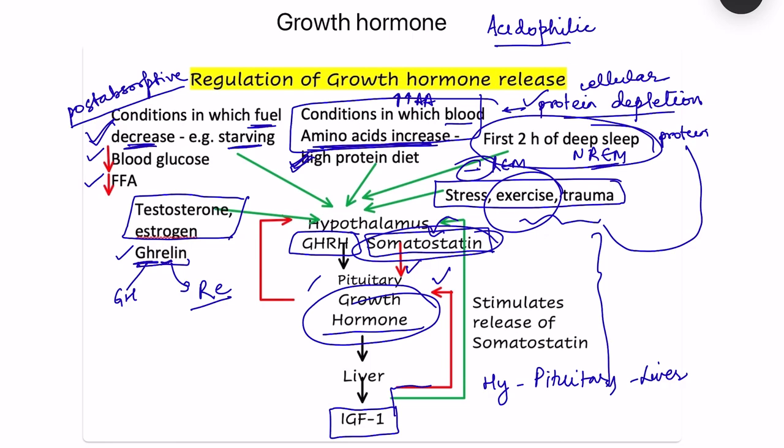Additionally, growth hormone itself acts on the hypothalamus to inhibit the release of growth hormone releasing hormone, providing further negative feedback regulation of growth hormone release.